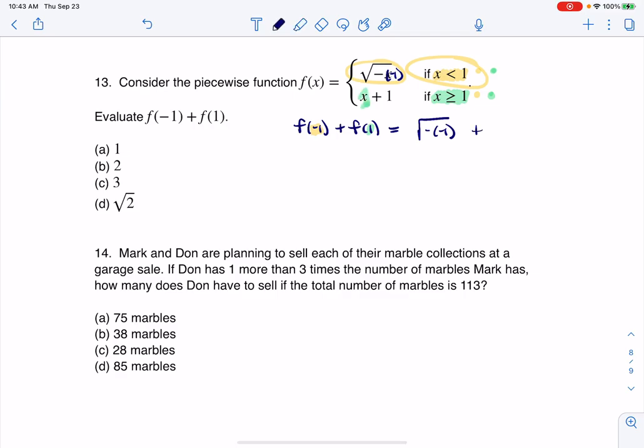So I'm gonna go ahead and plug in 1 here. I'm gonna add to it 1 plus 1, because the function was x plus 1. So let's play this out. This will become the square root of 1 plus 2. That becomes 1 plus 2, which is ultimately 3.